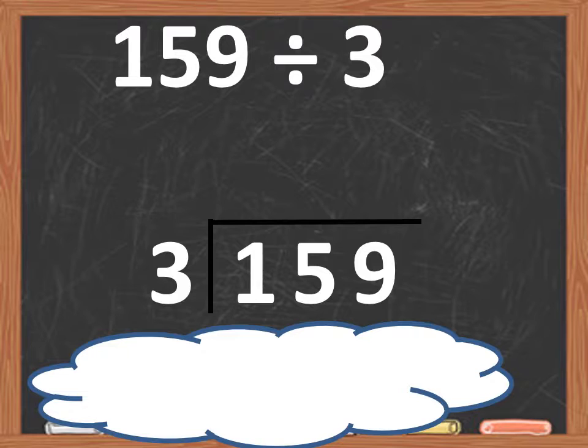Now let's take a look at our dividend one digit at a time. The first digit of our dividend is 1. Now we ask ourselves, can 3 go into 1? No it can't. So we have to move on.